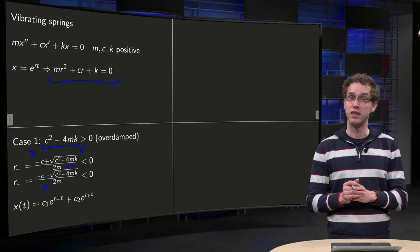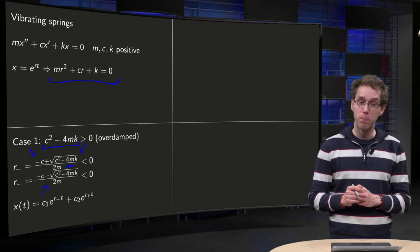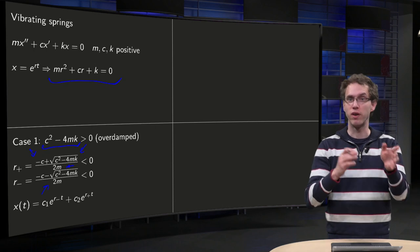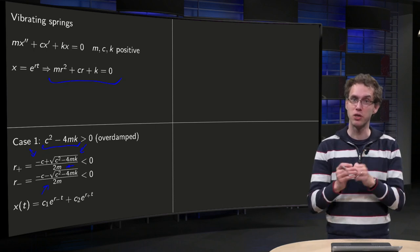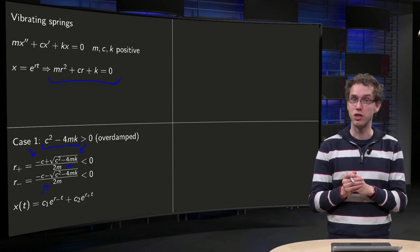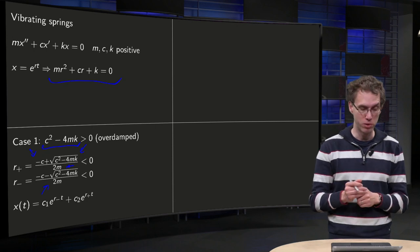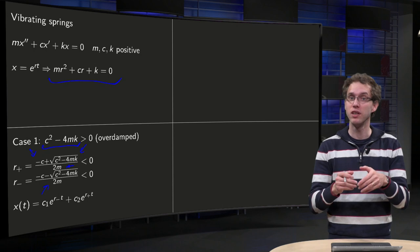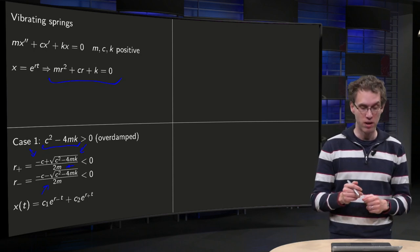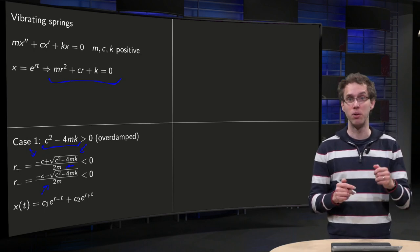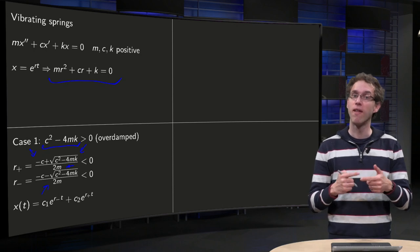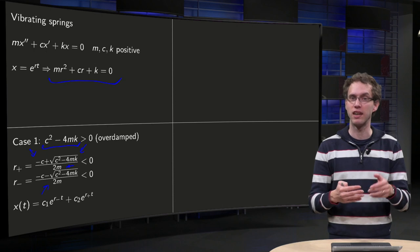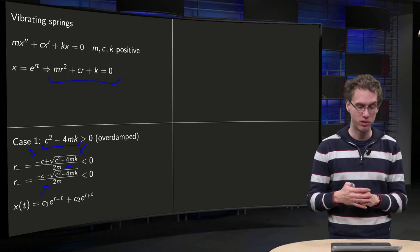r minus is obviously negative, but r plus is negative as well because in the square root we have c squared minus something, so what's in the square root is below c squared, so what's in the square root is below c, so we have minus c plus something which is smaller than c, which means that the sum is negative. So also r plus is negative, so both r minus and r plus are negative numbers. Their size depends on what c, m and k are exactly, but what's important is that they are both negative.